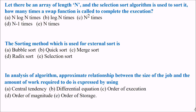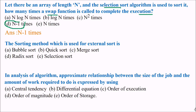Let there be an array of length n and the selection sort algorithm is used to sort it. How many times is the swap function called to complete the execution? The answer is n minus 1 times — you need n minus 1 executions of this particular function.